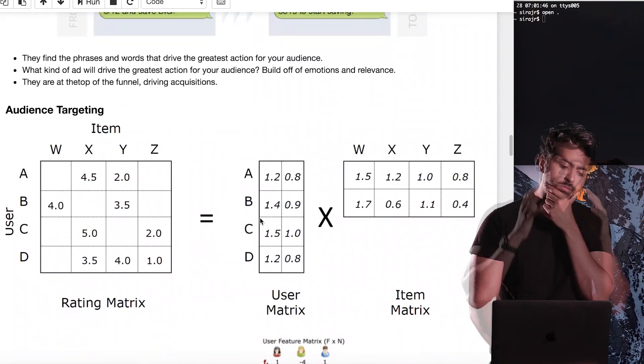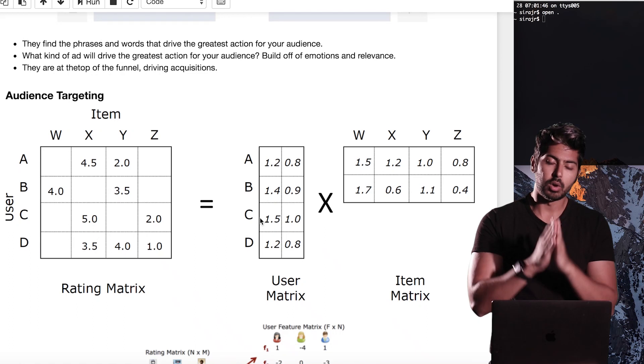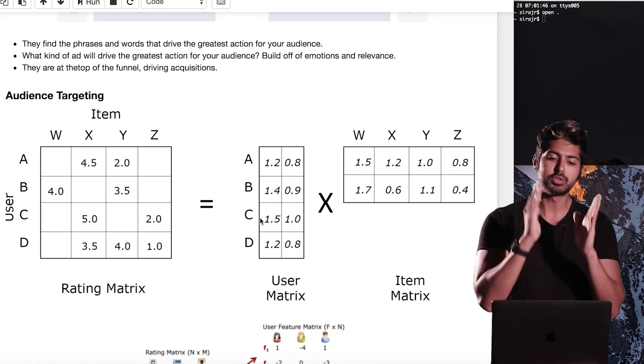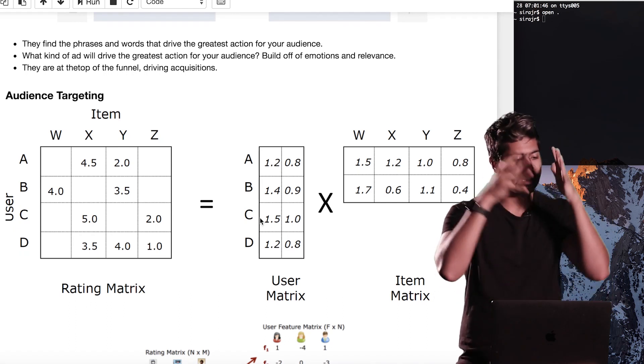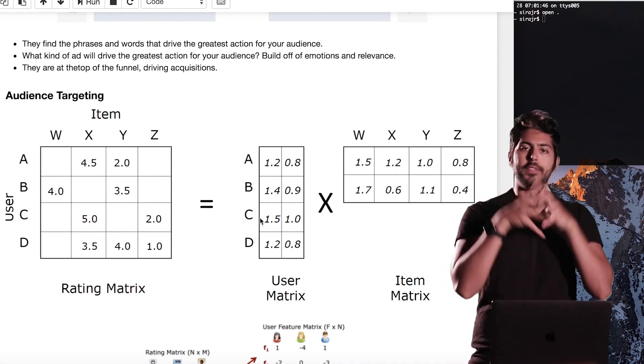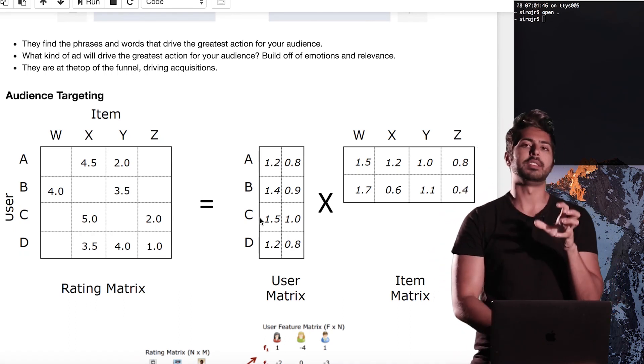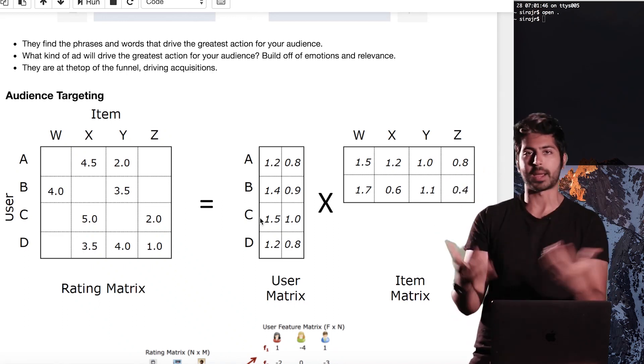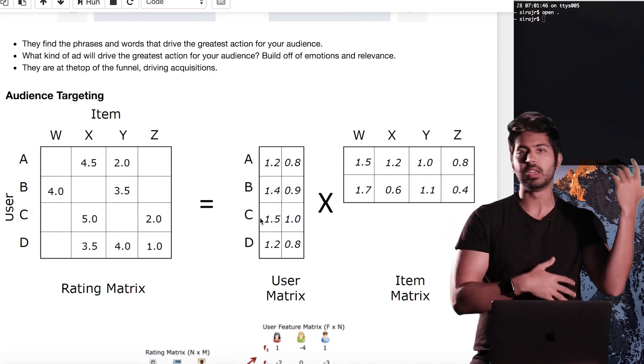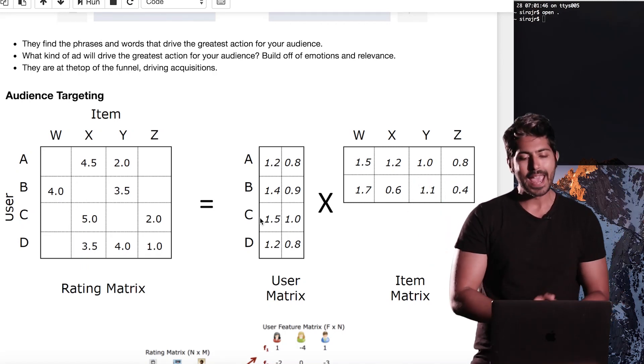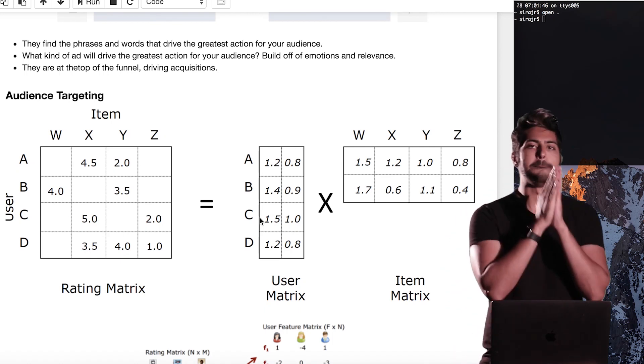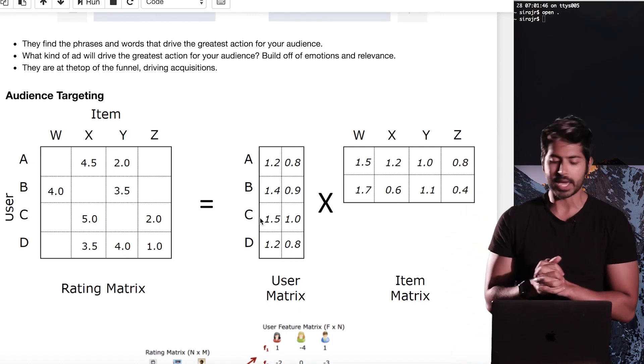So let's start with audience targeting. How do we target some segment of the audience that is going to be most likely to convert for a given ad and then focus all of our time and energy on that segment? So we could think about this as a recommender system problem. A bunch of sites use recommender systems - Amazon, Netflix, everybody uses it these days. And one very common way to build recommender systems is to use matrix factorization.